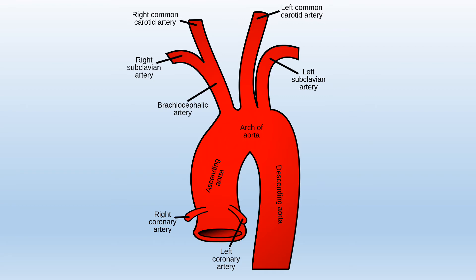There are three major branches arising from the aortic arch. Proximal to distal, they are the brachiocephalic trunk, left common carotid artery, and left subclavian artery. The brachiocephalic trunk is the first and largest branch; it ascends laterally to split into the right common carotid and right subclavian arteries, supplying the right side of the head and neck and the right upper limb. The left common carotid artery supplies the left side of the head and neck, and the left subclavian artery supplies the left upper limb with oxygen-rich blood.